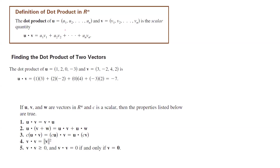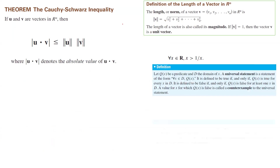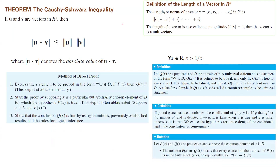So far we introduced the dot product between two vectors like u and v, went over an example, and discussed the properties of dot product. Then we talked about a theorem called the Cauchy-Schwarz inequality, which says the absolute value of the dot product between u and v is less than or equal to the magnitude of u times the magnitude of v. The magnitude is defined as the square root of the sum of squared components. Another name for magnitude is length or norm. We used direct proof to prove this theorem.